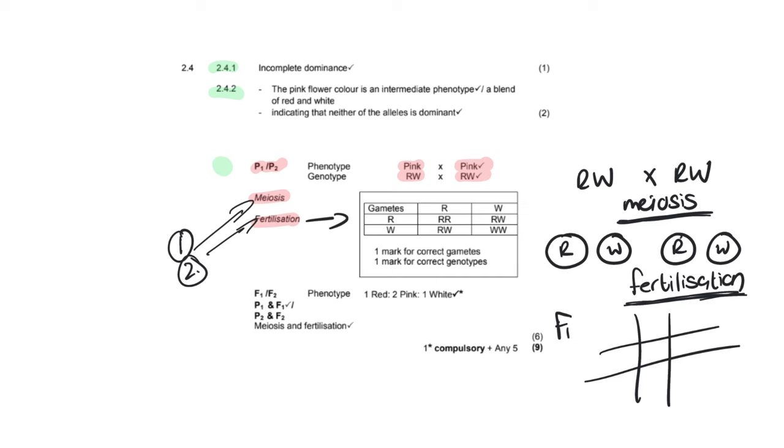Now, this particular one has just put the gametes straight into the Punnett square themselves. So there we go, RW. We do the cross, and we end up with the following outcome. We are going to get one set of red alleles. We are going to get two sets of pink, so RWs. And then we're going to get one white.